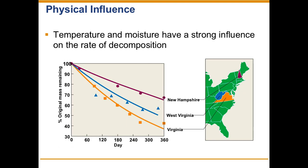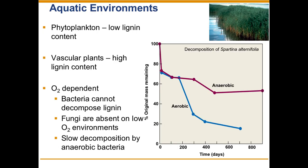Decomposition is also influenced by temperature and moisture. Leaf packs put outside and left to decompose over the year show that the same system breaks down far quicker in warmer, moister areas — like Virginia — than in cooler regions like New Hampshire. You come back over time and measure the dry mass of material remaining from the original, and the differences across regions are clear.